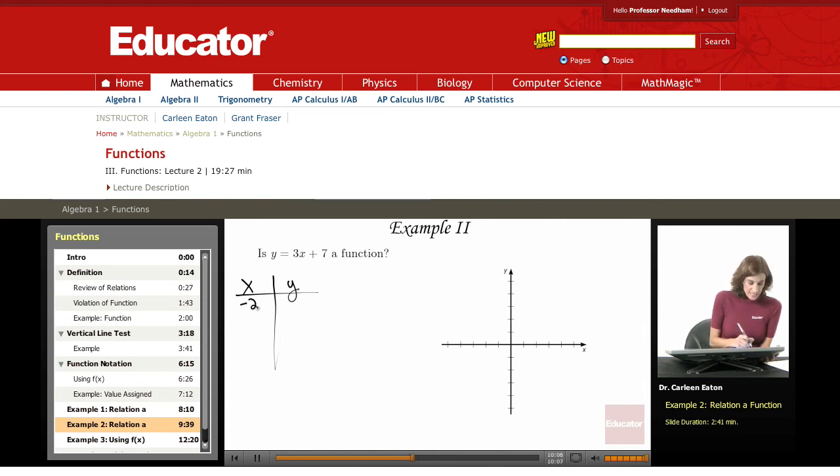So if x is negative 2 and I plugged it into this equation, I would get negative 2 times 3 is 6, plus 7, so I would get y equals 1. And if I did that for multiple values, I would actually come up with a table that gives me some ordered pairs.